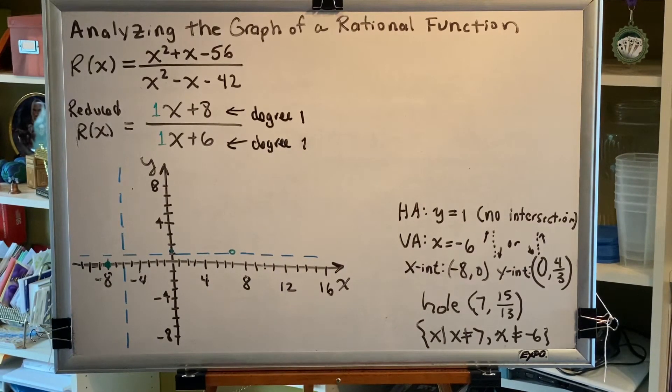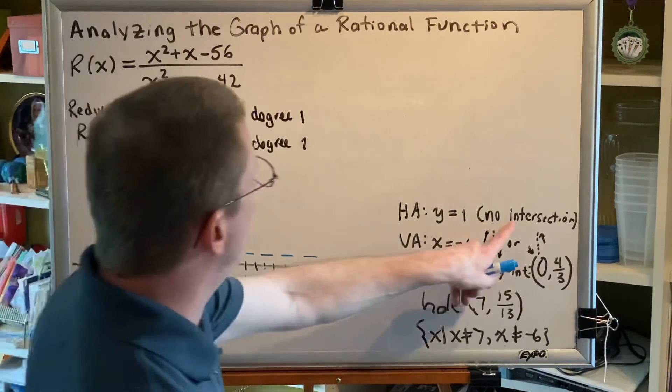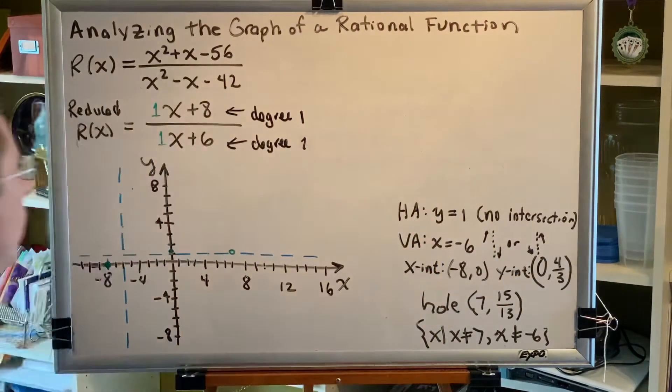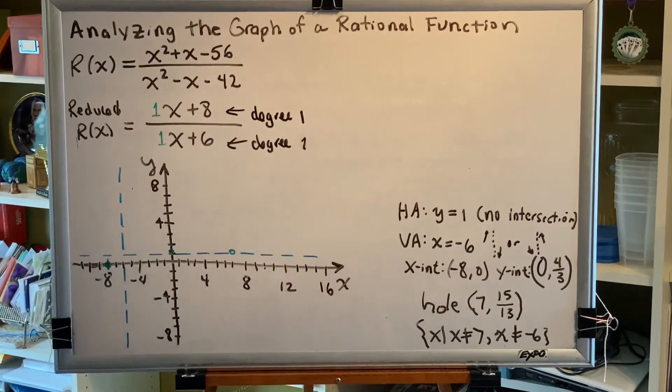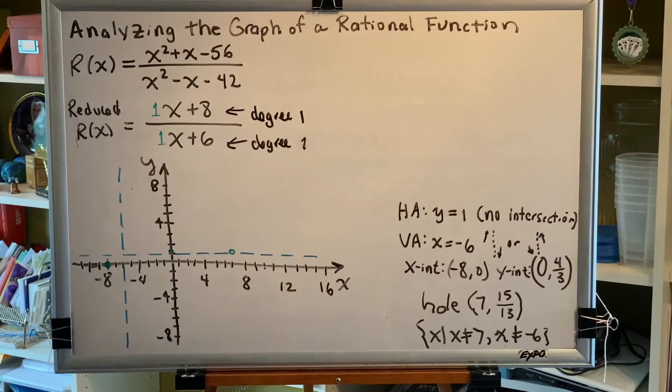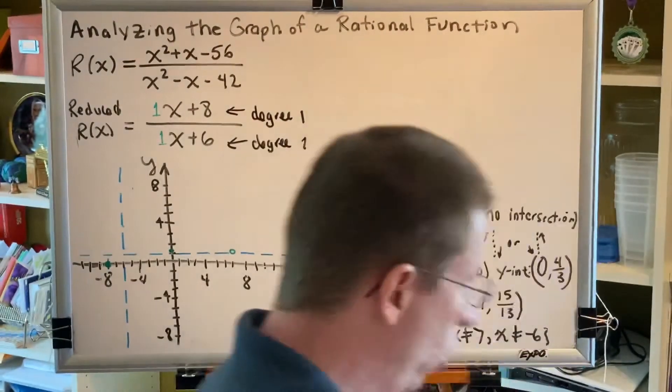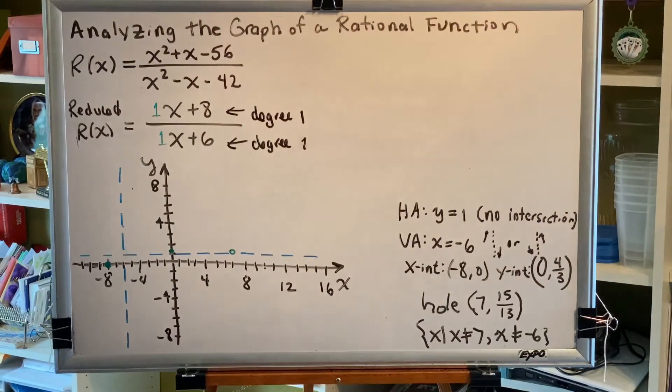Now we just have to find a way to connect all of these points together to see if we can create our graph. We know that there is no intersection of our graph with the horizontal asymptote shown here. So what that means is, if we can just figure out how the points that we have so far approach the vertical asymptote, we'll have an idea of what this graph looks like.